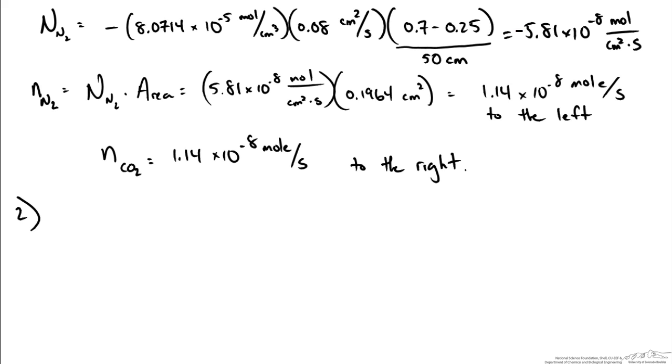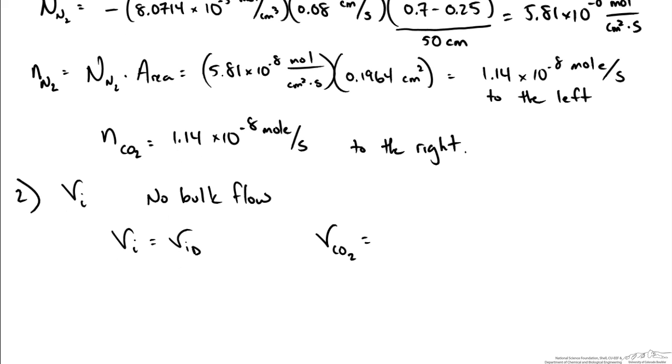The second part of this was to determine the individual species velocities. We know because there is no bulk flow that the species velocity VI is just due to the diffusive velocity of that species. If we wanted to determine the velocity of CO2 we can set this equal to our flux of CO2 divided by our concentration of CO2. Because we know the velocity times the concentration of the species will give us our flux.